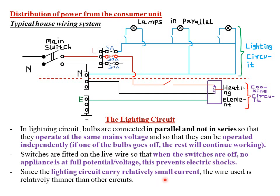Since the lighting circuit carries relatively small current, the wires used are relatively thinner. The cooker circuit, carrying a large current, requires thicker wires to reduce power losses through resistance. A thicker wire has a larger cross-sectional area, meaning more electrons per unit area and therefore less resistance — so for circuits using about 30 amperes, thick wires are essential to reduce electrical losses and maintain low electrical resistance.